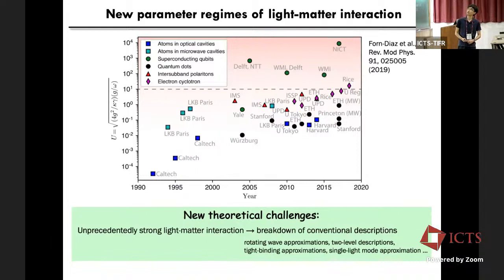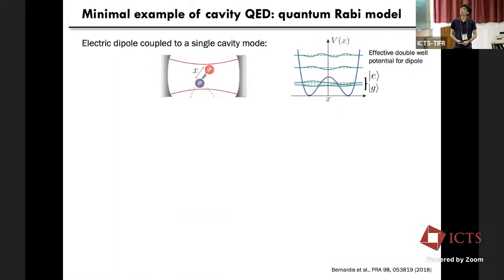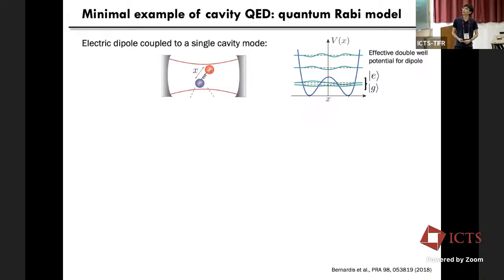As I mentioned, strong light-matter coupling has been achieved, and because these are new parameter regimes, they naturally lead to new theoretical challenges and the breakdown of conventional descriptions. Let me illustrate this difficulty by considering a very simple example in cavity QED, namely the quantum Rabi model.